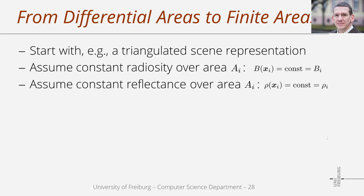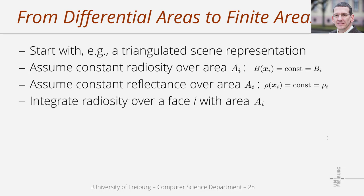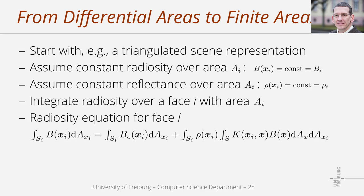We further assume that the reflectance rho is constant within one patch, so we have one reflectance value per patch i rather than per position xi. We then take the radiosity equation and integrate all terms over the area ai of patch i. On the left-hand side we integrate the radiosity values over ai, and on the right-hand side we integrate the emitted and reflected radiosities over ai. Here s indicates an integral over all patches, and si indicates an integral over one patch i.